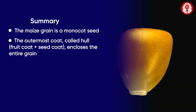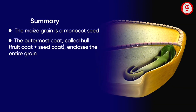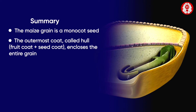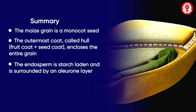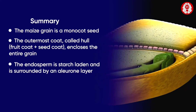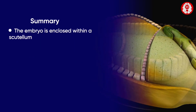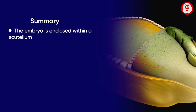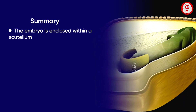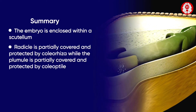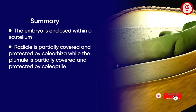The outermost coat called the hull encloses the entire grain and is formed of fruit coat and seed coat. The endosperm is starch-laden and is surrounded by an aleurone layer. The embryo is enclosed within a scutellum.